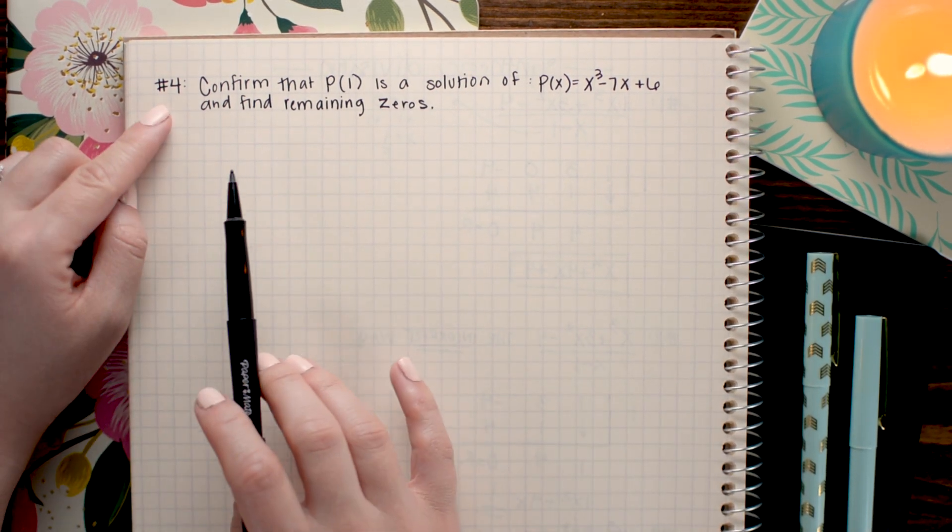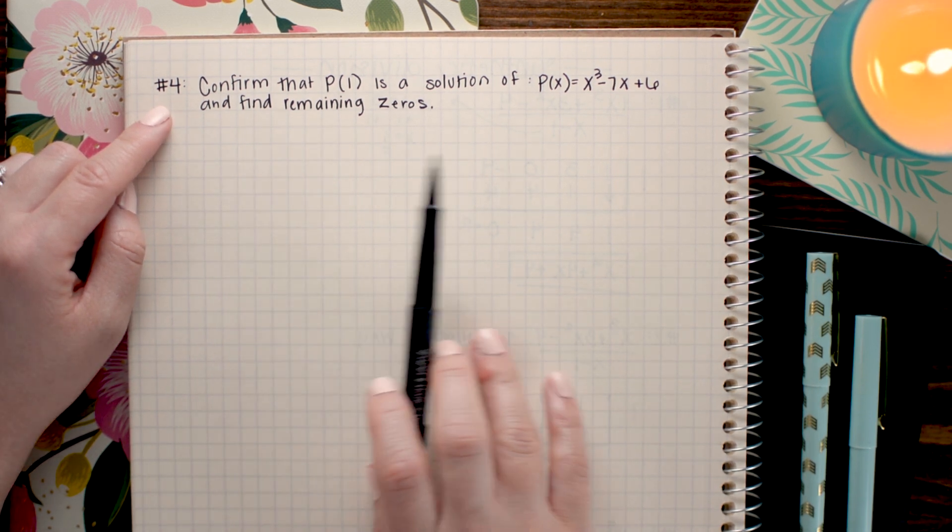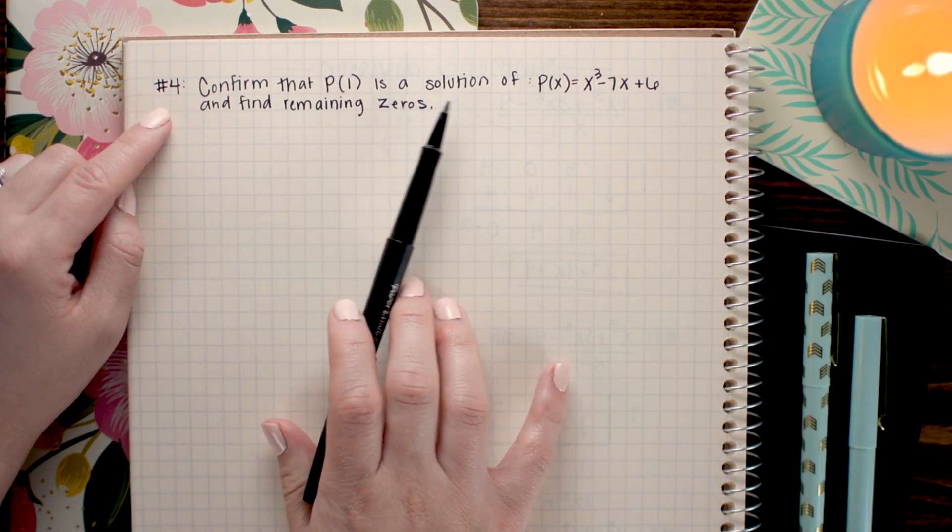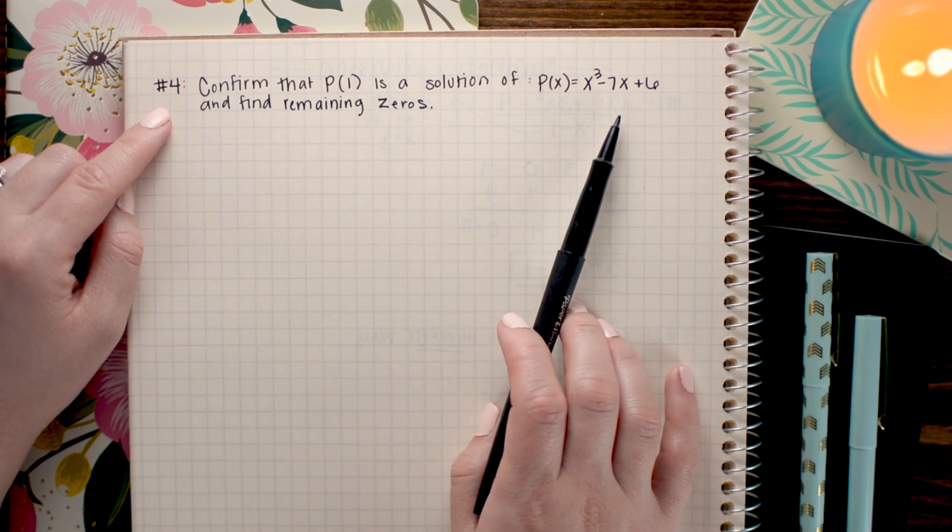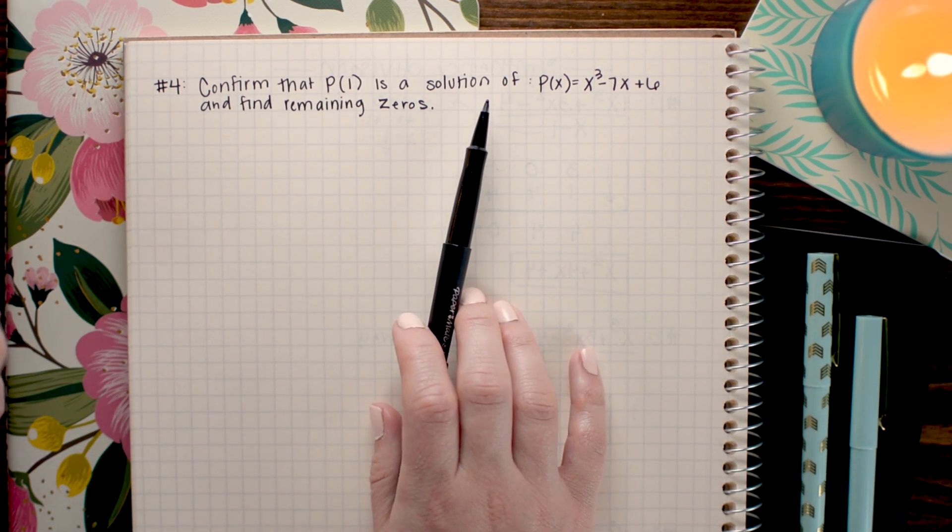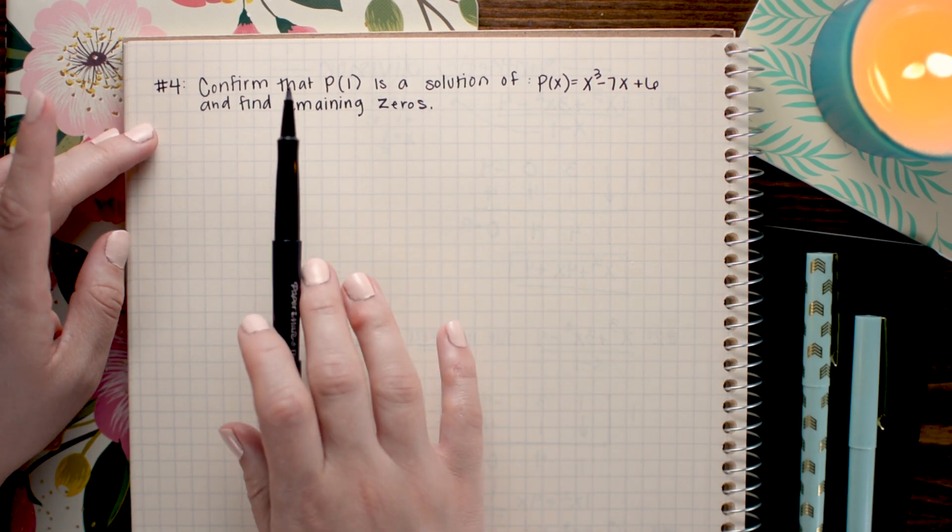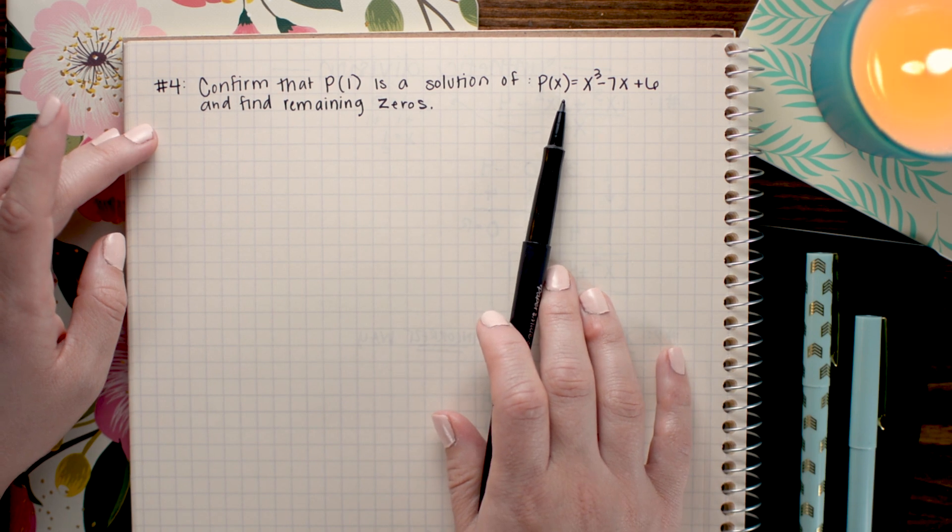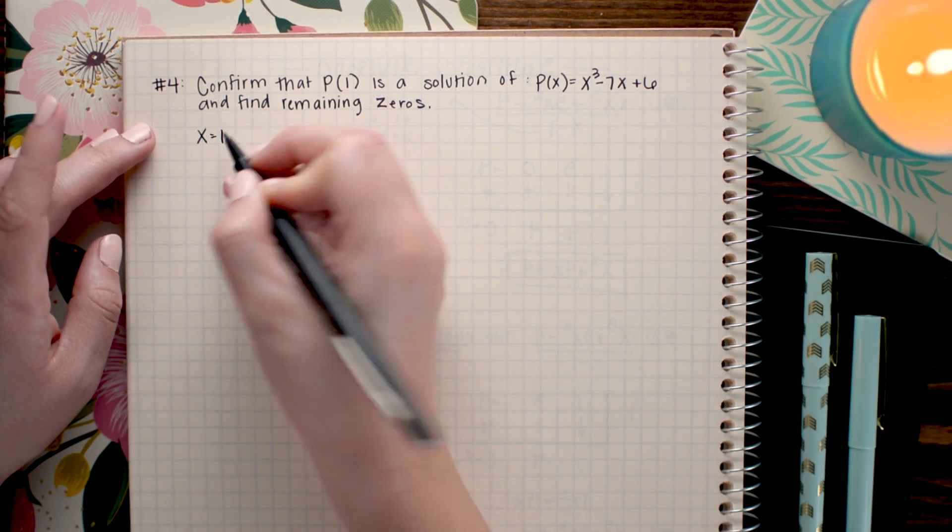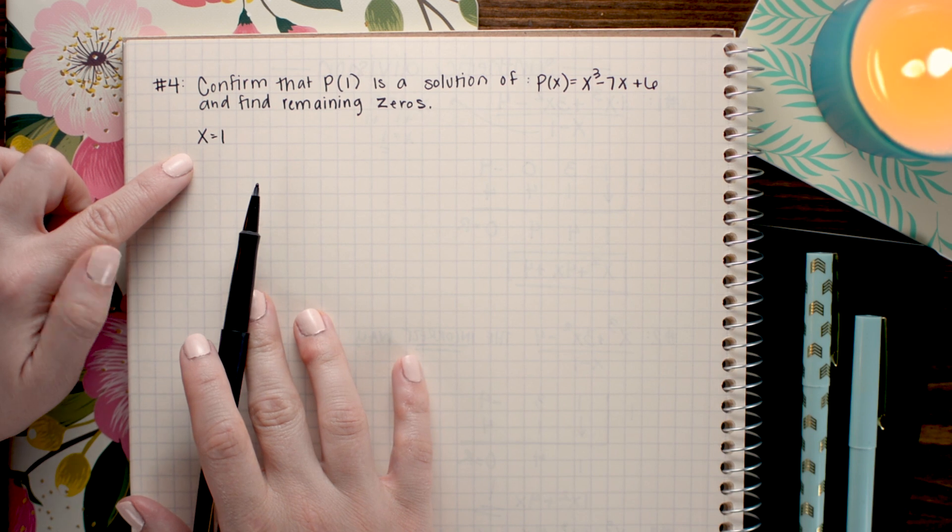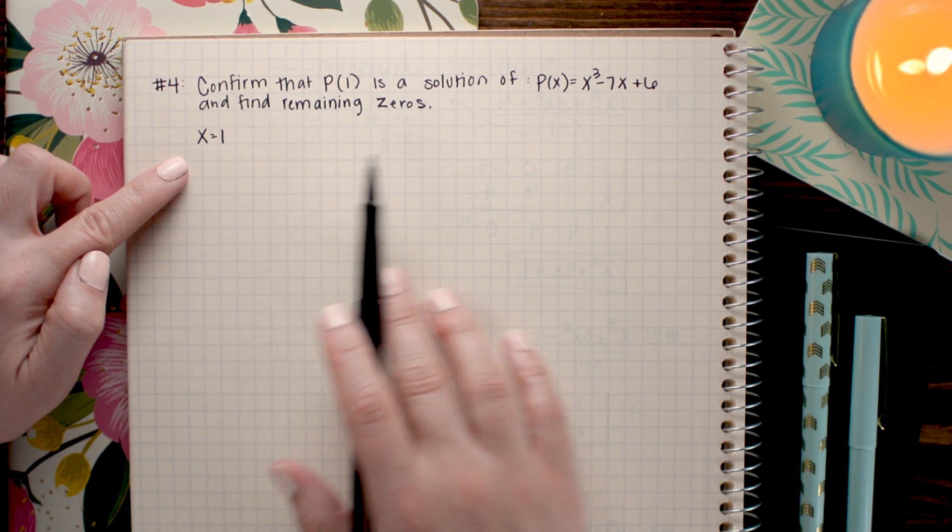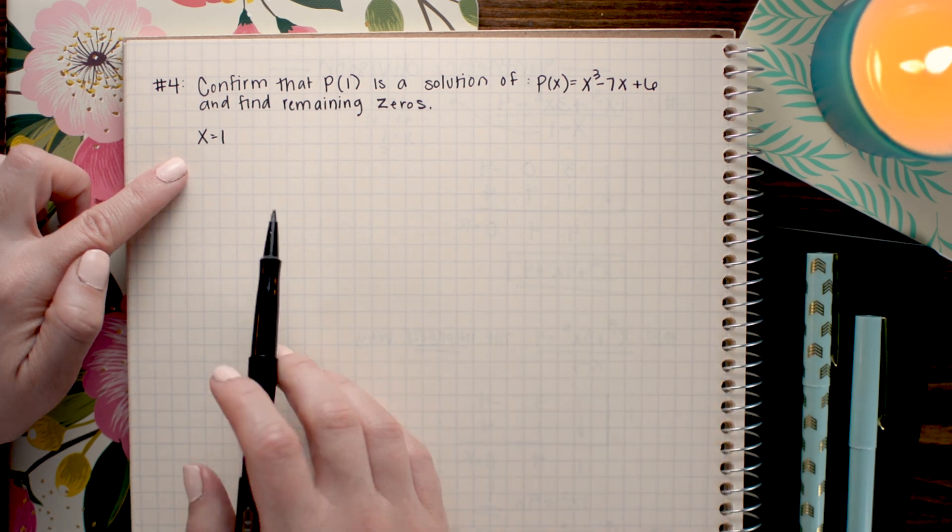In this final problem we will be using synthetic division although it doesn't say explicitly to use synthetic division to solve this problem. So it asks us to confirm that p of 1 is a solution of the polynomial x cubed minus 7x plus 6 and then find the remaining zeros. To confirm that a value is a solution or a zero of a polynomial there's a couple things you can do. Notice how the 1 is in place of the x. Here I have p of 1 and here I have p of x. That means that x equals 1 is what we want to test. There's a couple ways you can test this. The first way and if you just need to confirm that it is a solution like we are in this one we can simply plug that in for x and make sure that it equals zero. So I'm going to do that to start with.